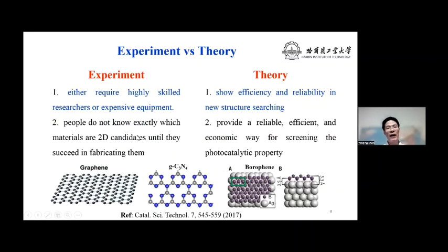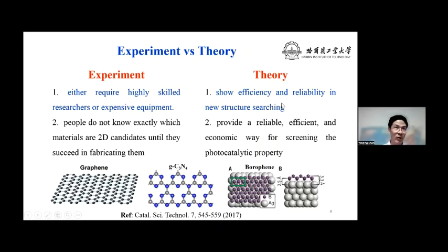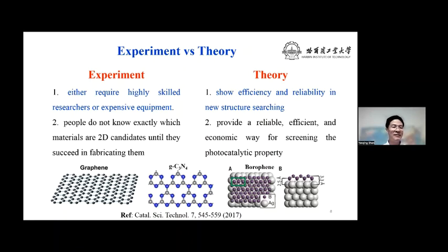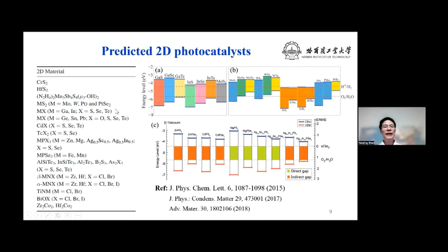Experiments are very expensive and time consuming. But theory, such as first-principles calculations, can first screen potential 2D materials with accuracy comparable to experiments. In fact, many 2D materials were first predicted by theory before they were synthesized, like graphene and so on. Today, many 2D materials have been predicted to be photocatalysts.